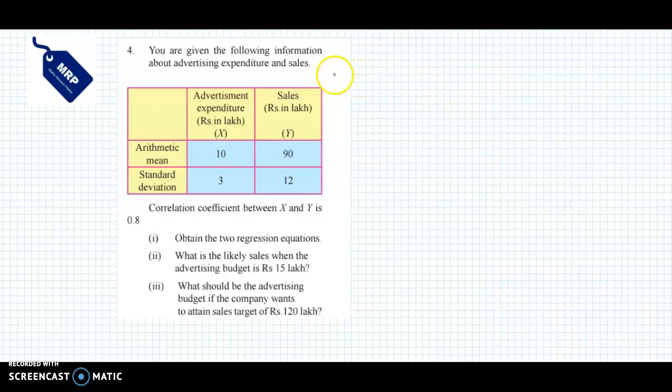Hello and welcome back. We are going to discuss question 4. You are given the following information about advertising expenditure and sales. Advertisement expenditure and sales is given in this table, and the correlation coefficient between x and y is 0.8.